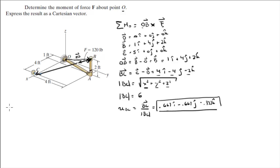This unit vector multiplied by the magnitude of F gives you the Cartesian vector form of F. So F is equal to the magnitude of F which is given at 120 pounds times the unit vector BC. So 120 multiplied by these three numbers gives you the Cartesian vector form of F which comes out to be 80i minus 80j minus 40k. So we got the Cartesian vector form of F and we got OB.